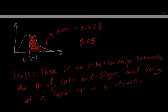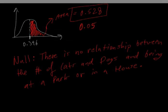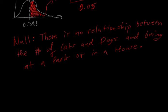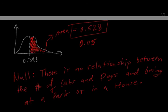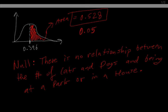If our p-value, which is this area given right here, if this was below 0.05, we would reject the null hypothesis, which would mean that there actually is a relationship between being at a park and being in a house and the number of cats and dogs. But because it is 0.528, we actually fail to reject the null. Which means, essentially, the number of cats and dogs is not different, depending on whether you're in a park or at a house.